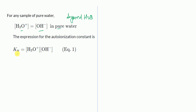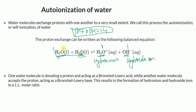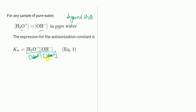The expression for the auto-ionization constant is Kw, written as Kw = [H₃O⁺][OH⁻]. Normally we would divide by reactant concentrations, but since water is in liquid form we do not include it in the expression. So Kw equals the product of hydronium and hydroxide ion concentrations — this is the dissociation constant of water.